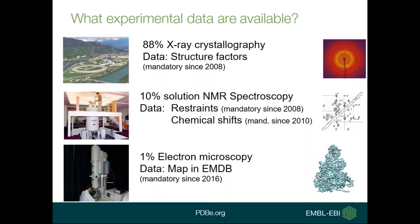The other major method is electron microscopy, currently only 1% of the archive but a growing technique. The supporting data for EM-derived structures is an electron microscopy map, which goes into our partner archive, EMDB. While it's only been mandatory since last year to deposit the map in EMDB when depositing the model in the PDB, more than 1,000 EM models already have a map in EMDB.